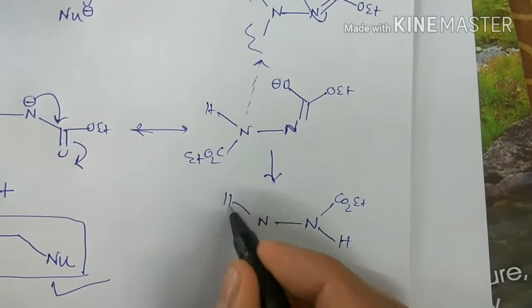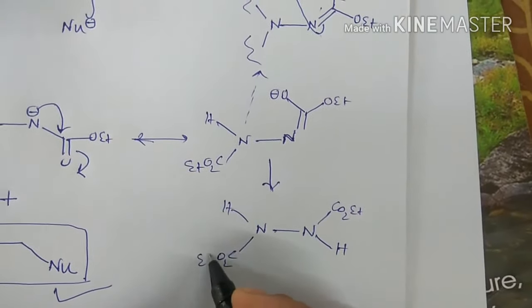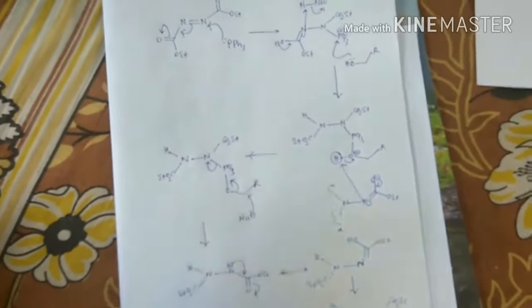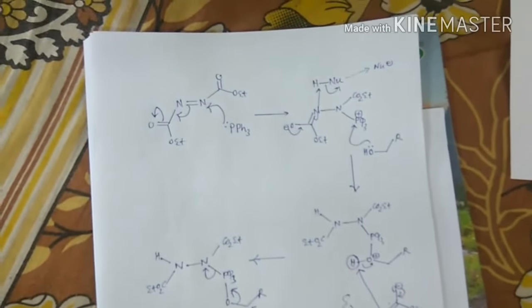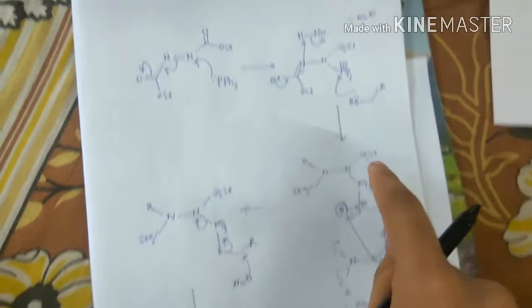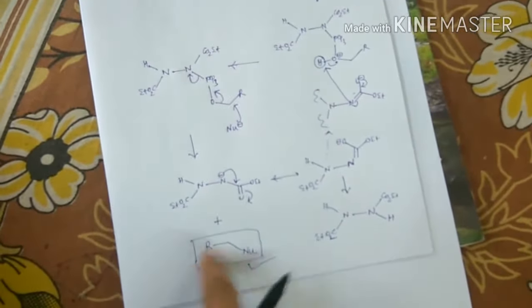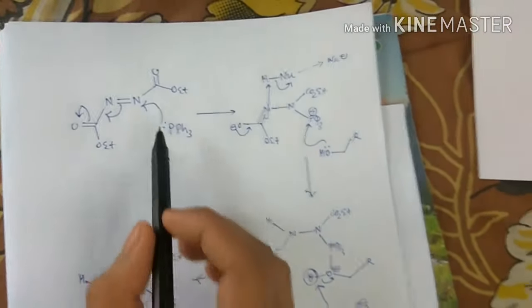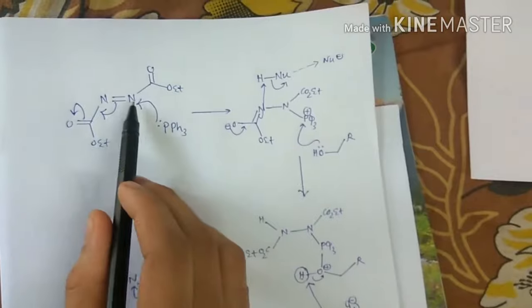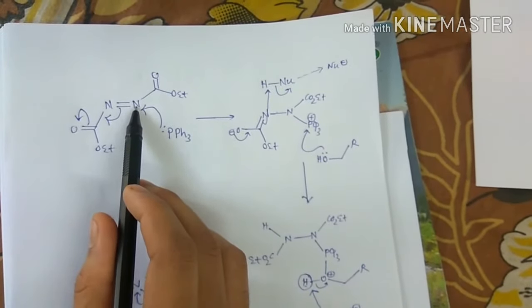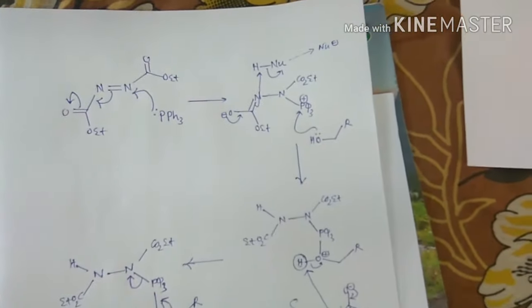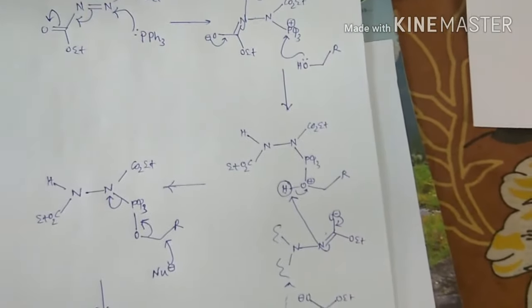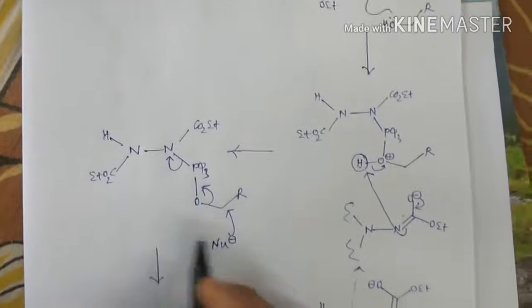Finally, what is sure is that this will end up as CO2Et-H and CO2Et-H here. So this is the whole mechanism of the Mitsunobu reaction — these are the steps involved in this reaction to get this product. The key step is the attack of this phosphine over DEAD, which is possible because of the electrophilic nitrogen end due to the pull of the CO2Et group.